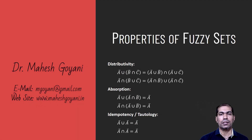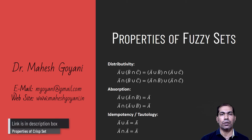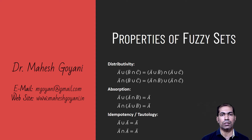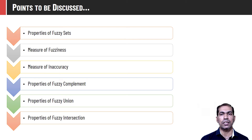Hello folks, welcome to Good Crux. This is Maheshwari and in this video I am going to talk about properties of fuzzy sets. Fuzzy sets follow almost identical properties to crisp sets. I have already made a video on properties of crisp sets — the link is given in the description box. In this video I will talk about different properties of fuzzy sets, followed by how to find fuzziness and inaccuracy, and at last we will discuss properties of complement, union and intersection.